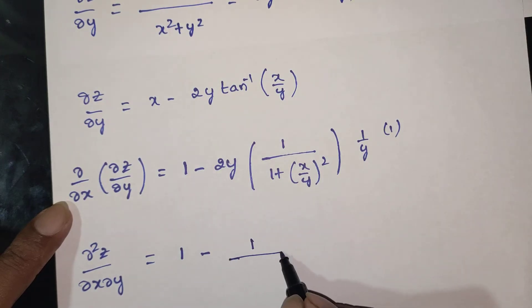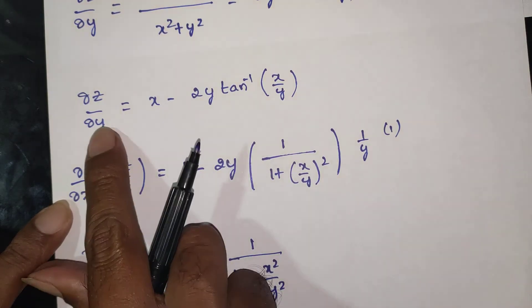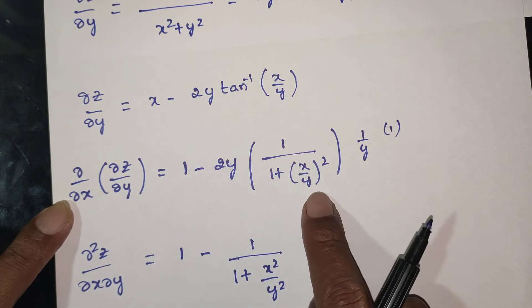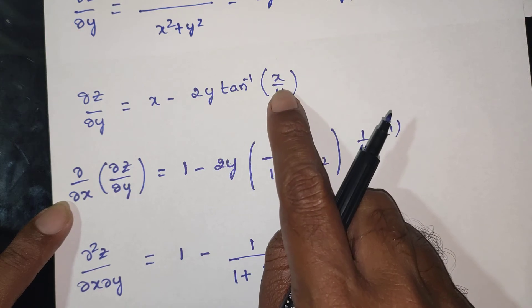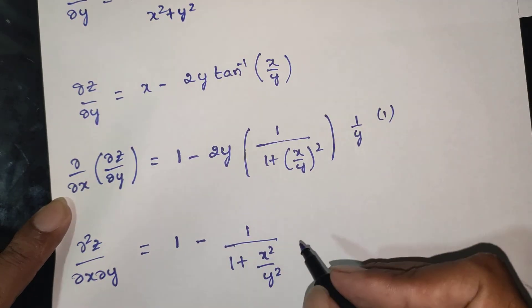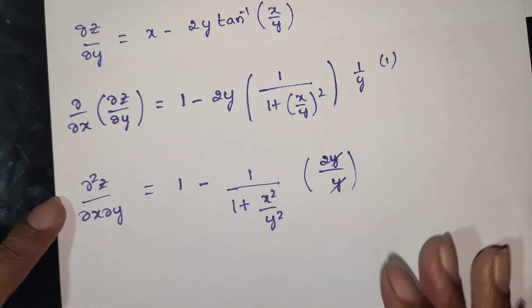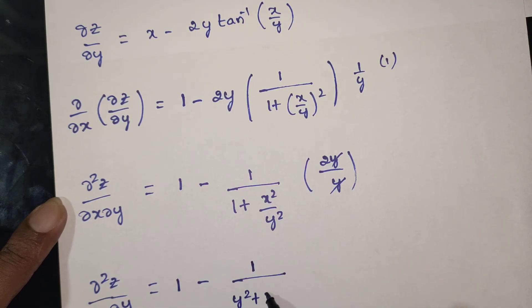It will be equal to: dou by dou x of dou z by dou y. With 2y constant, applying 1 by 1 plus x by y whole square, with 1 by y constant and x by y differentiated as 1 by y into 1. After the y cancels, dou square z by dou x dou y is equal to 1 by y divided by y square, divided by y square.